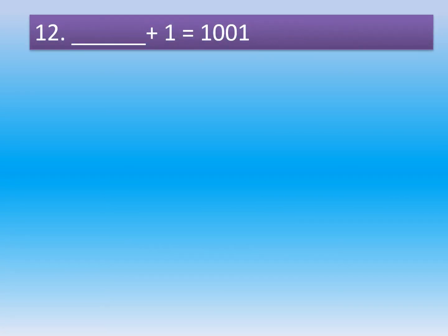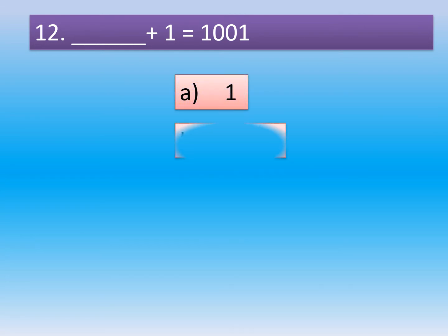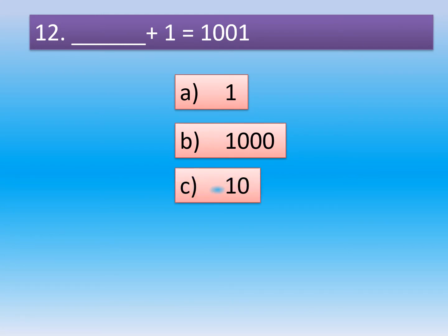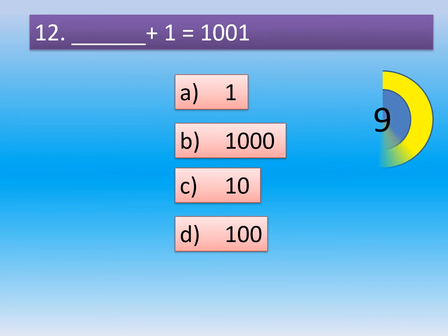Question number 12. Dash plus 1 is equal to 1001. Option A: 1. Option B: 1000. Option C: 10. Option D: 100.